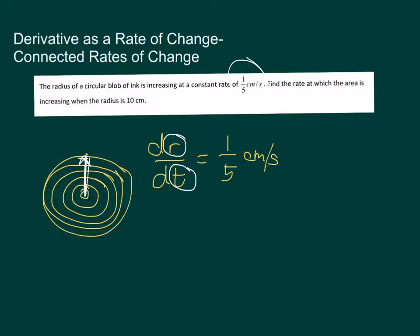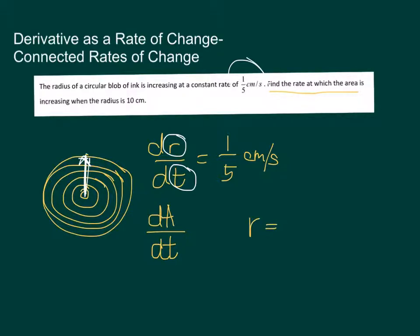What we are actually looking for in this problem is the rate at which the area is changing or increasing when the radius is 10 centimeters. We are particularly interested in the derivative of A with respect to time, not with respect to the radius. We want to find the rate of change of the area with respect to time, given a specific value of the radius at that instance.